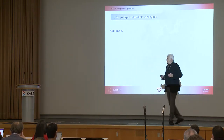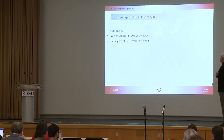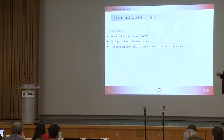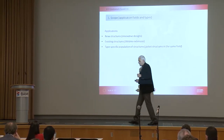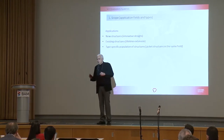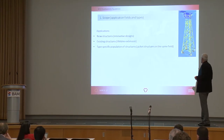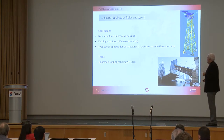The applications are representative for new structures — especially innovative designs where knowledge is not always standardized, because we should not expect standards for everything. For existing structures, we frequently have the problem of lifetime extension. For type-specific populations of structures: when working in Italy, we had several platforms in Africa and the Gulf of Guinea for AGIP and had to select which platforms and joints to inspect, since they were similar jacket structures and you cannot inspect everything. Similar examples apply to bridges and other structures.